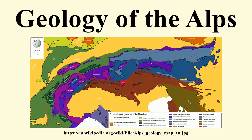Folds and thrusts north of the Periadriatic seam are generally directed to the north. The dominant vergence in these units is to the north. In the southern Alps the thrusts are to the south, so the vergence is dominantly southward. The rocks of the Austroalpine nappes form most of the outcrops in the eastern Alps, while in the west these nappes are, with the exception of a few places, eroded away.